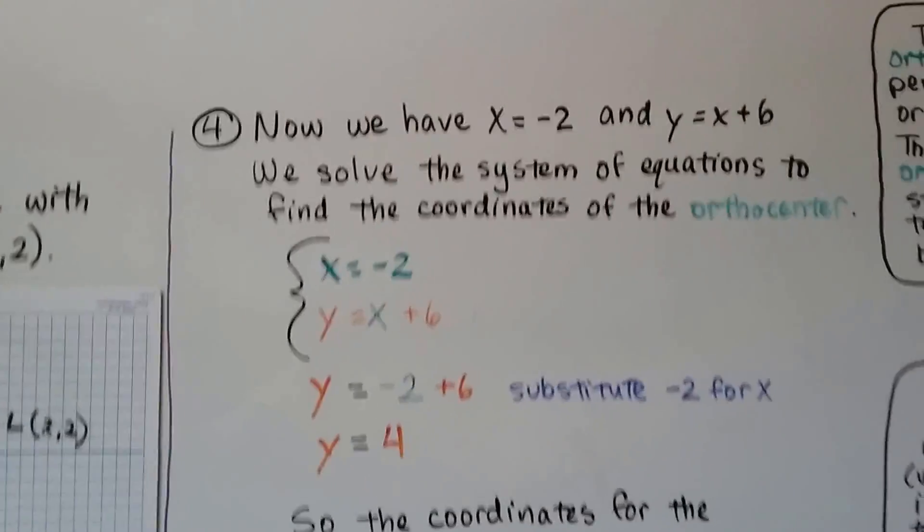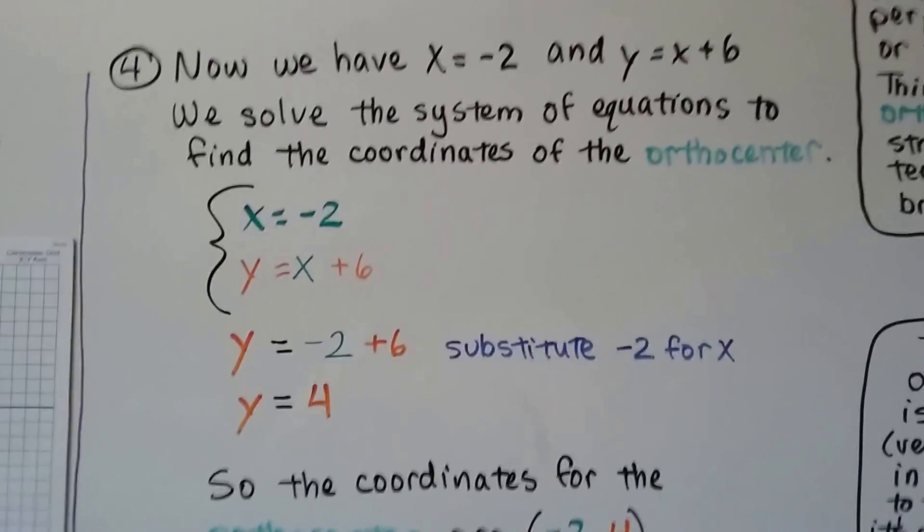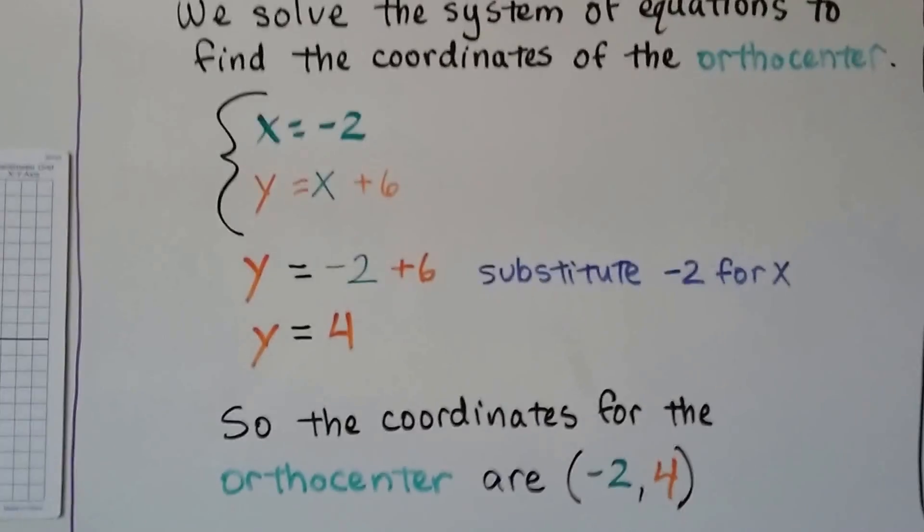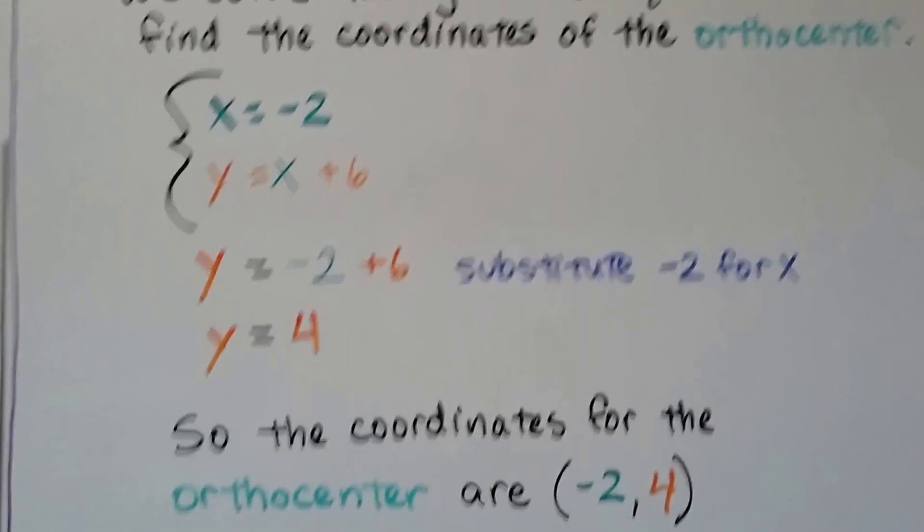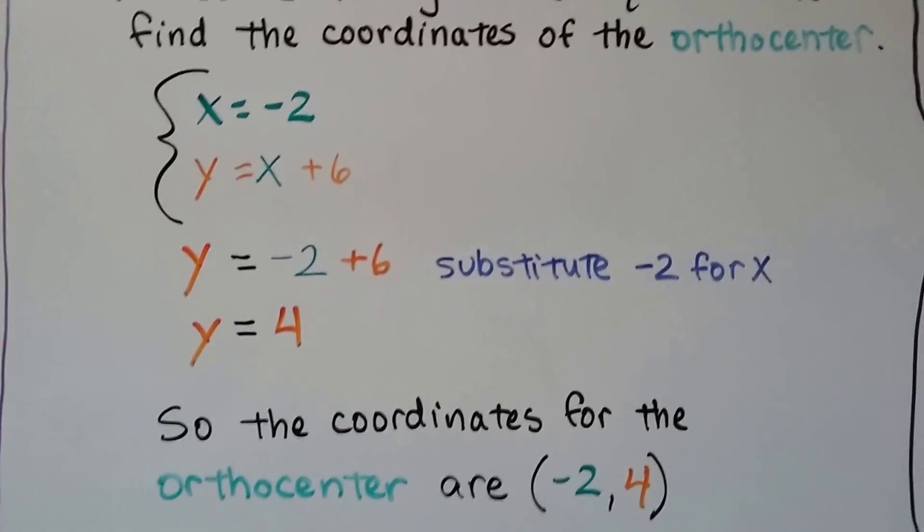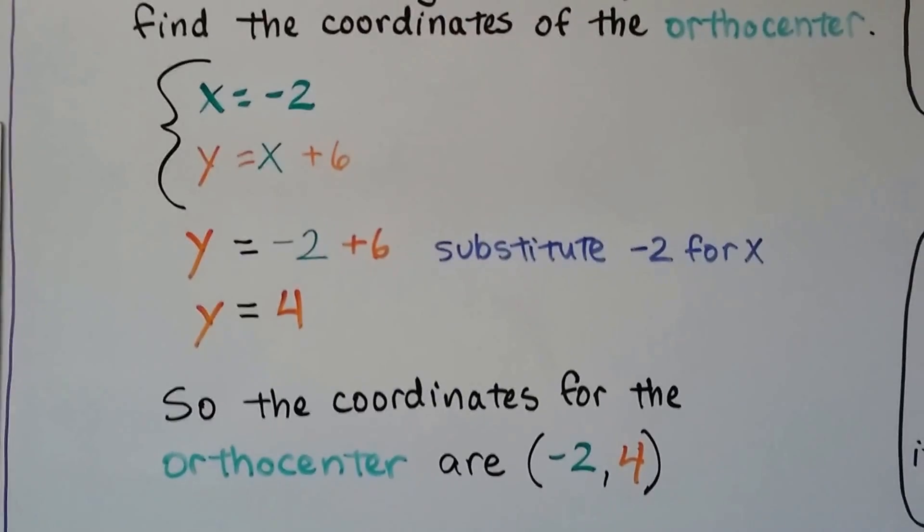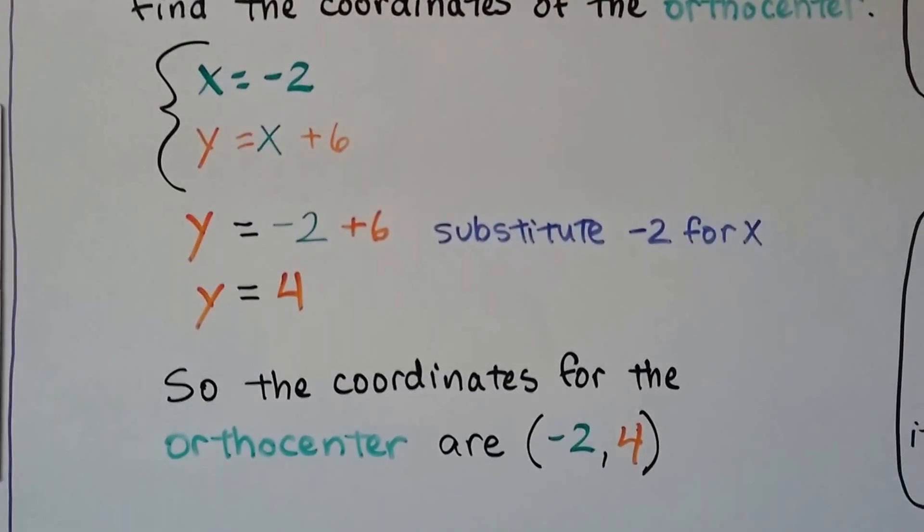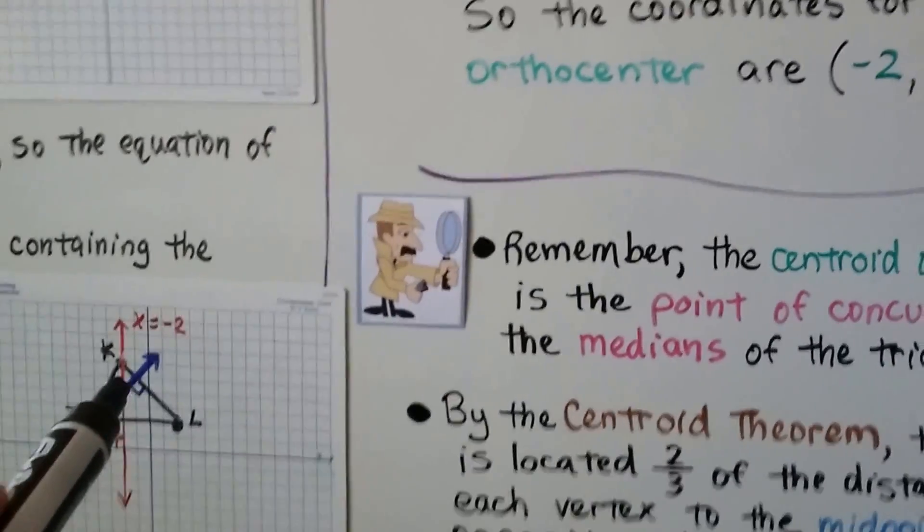So now we have x equals a negative 2, which we found right here, and y equals x plus 6. And we solve the system of equations to find the coordinates of the orthocenter. Well, if x equals negative 2, we can substitute it in here for x. The negative 2. So we have y equals negative 2 plus 6, which means y equals 4. So the coordinates for the orthocenter are negative 2, 4. Negative 2, 4 right there.